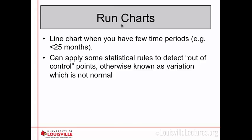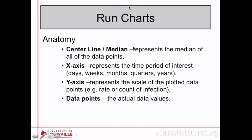All data is going to vary to some extent, but what you want to look at is whether this variation is normal or caused by something. The anatomy of a run chart: you're going to have your center line, which is the median of all your data points. Your x-axis is going to be your time period of interest — days, weeks, months, or years — whatever you are using as your grouping time.